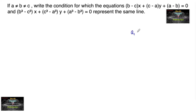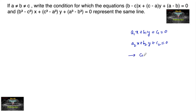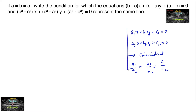We know that two lines a₁x + b₁y + c₁ = 0 and a₂x + b₂y + c₂ = 0 represent the same line (coincident) if the condition a₁/a₂ = b₁/b₂ = c₁/c₂ holds. Let's use the same condition here.